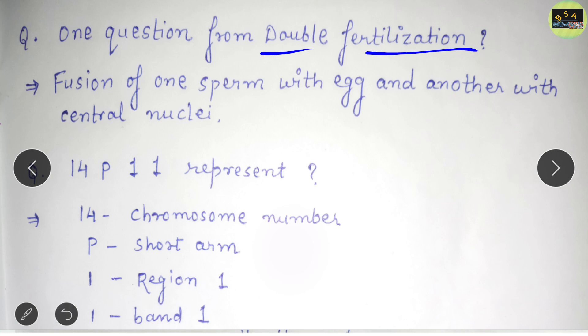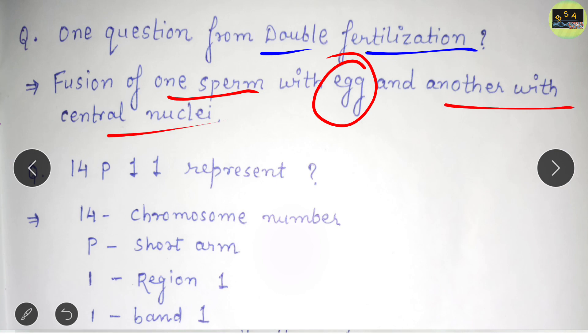The next question came from double fertilization, where you have to select the correct statement. In double fertilization, there is a union of two male gametes with different nuclei of the embryo sac. It was first discovered in Lilium by Navashin. The fusion of one sperm with the egg and the other with the central nuclei occurs — this is double fertilization. A very easy question from which you can easily get marks.